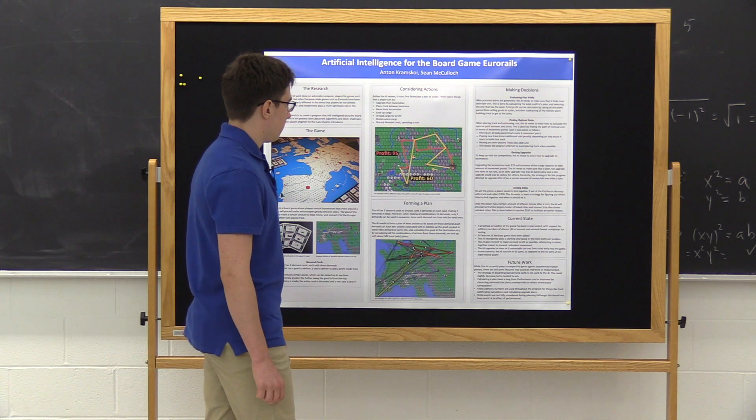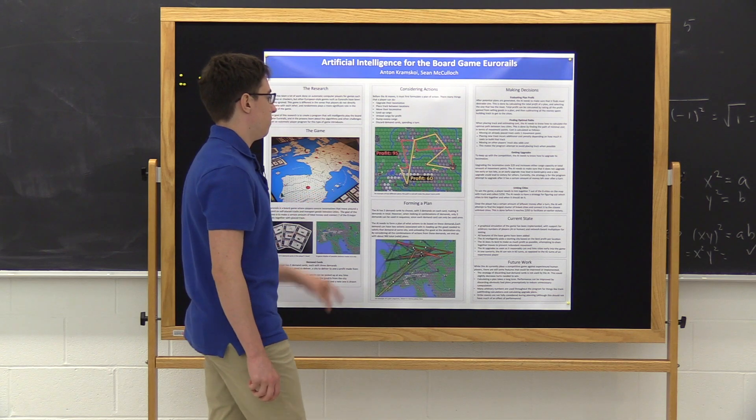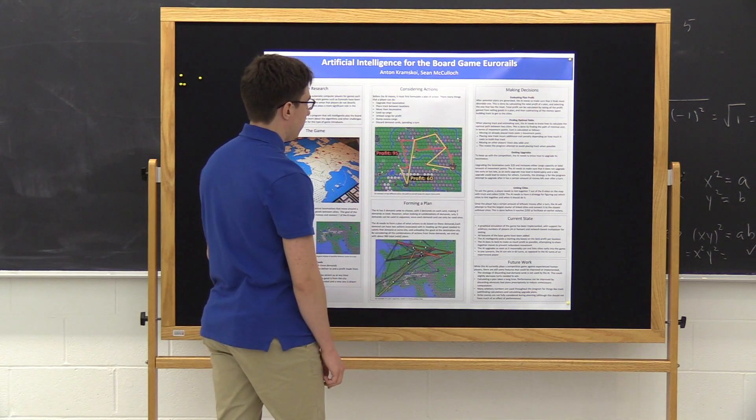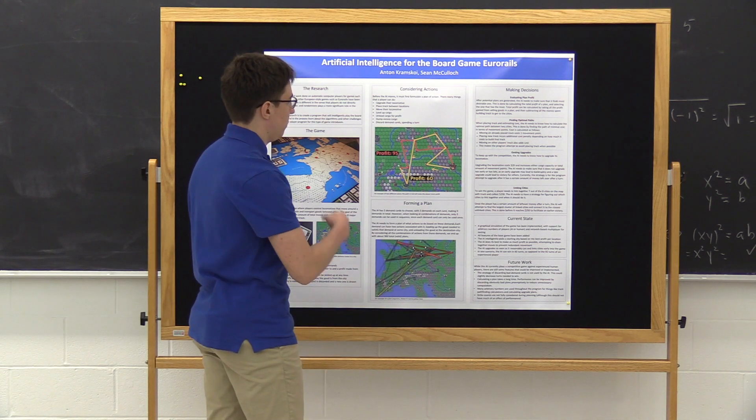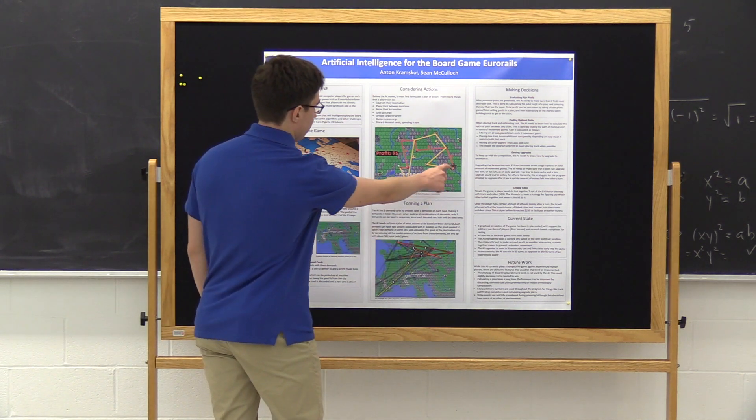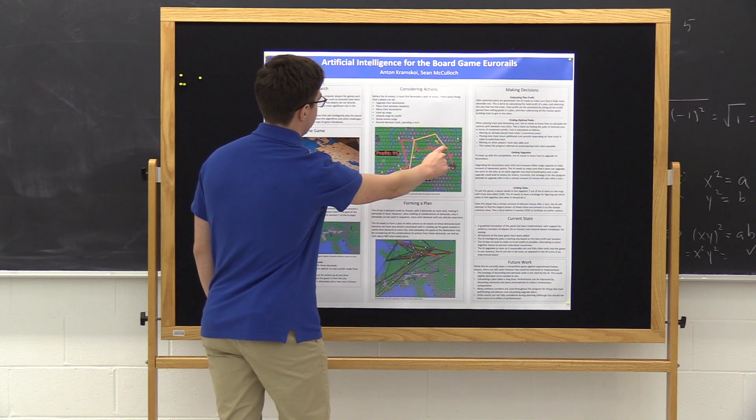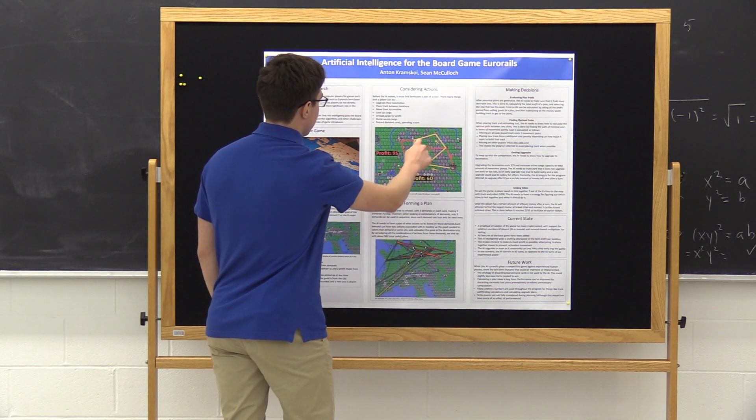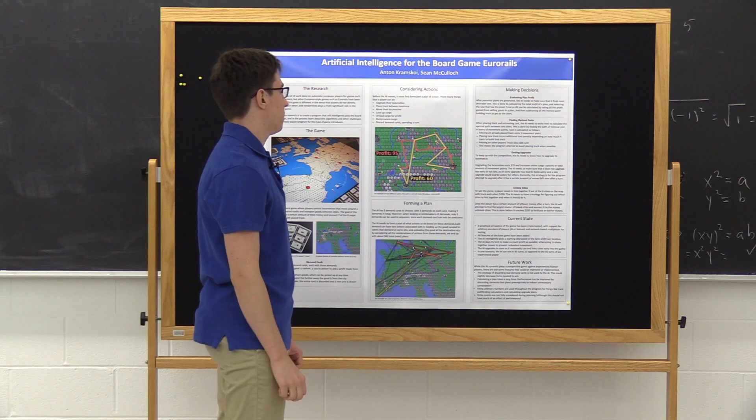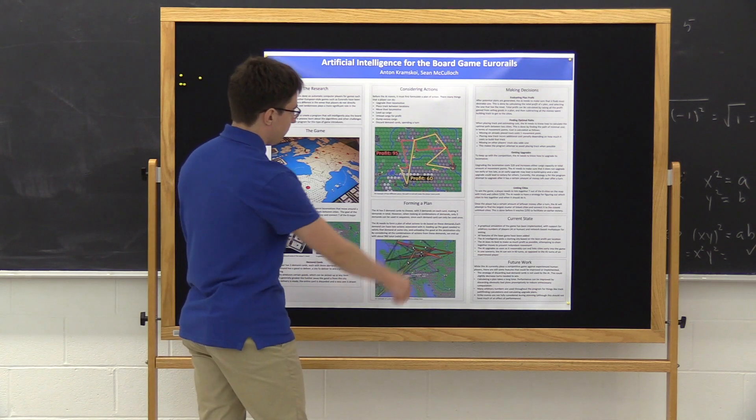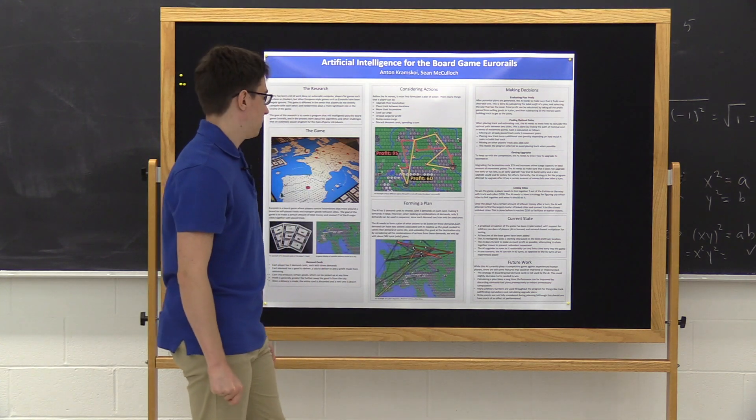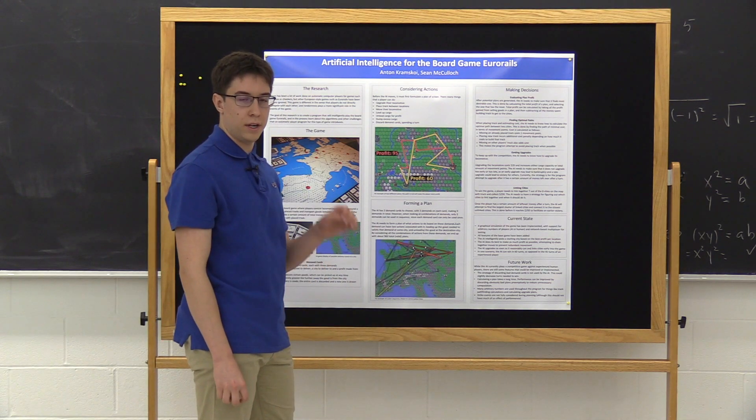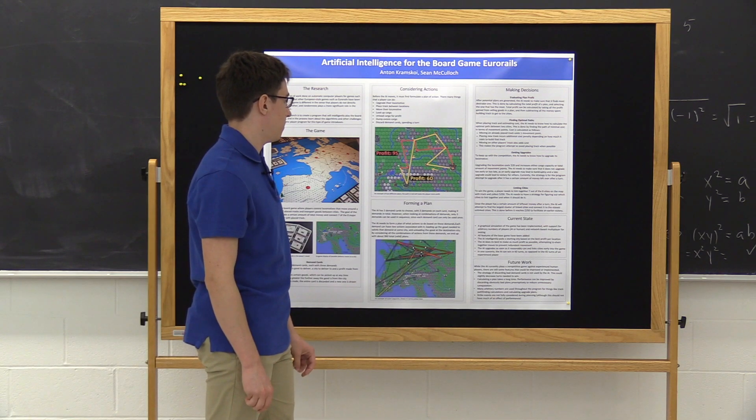So how does this really work? Let's say the player starts in this location. There are a number of paths they can take to make profit. For example, they can move to this city, pick up a good and deliver it here, and then keep going and picking up and delivering goods. But they can also follow the red path and pick up different combinations of goods. What the AI needs to do is pick the path that maximizes profit.